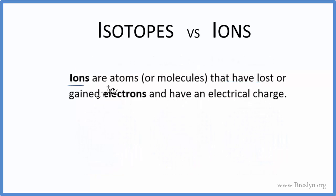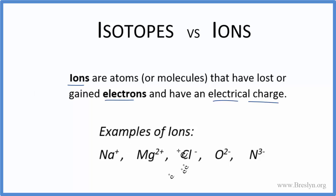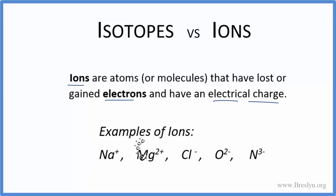Ions, on the other hand, are atoms, or sometimes molecules, that have lost or gained electrons, so they have an electrical charge. Examples would be elements that have a plus or a minus after them — these are considered ions. They have a charge. They've lost electrons if they're positive, and if they're negative, they've gained electrons.